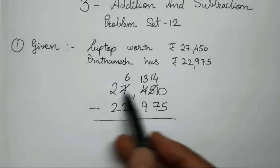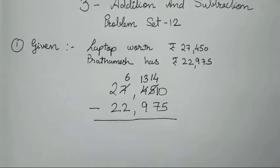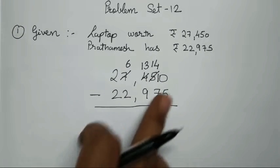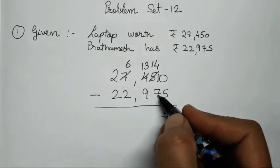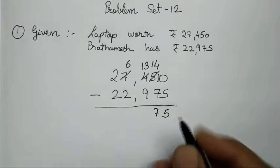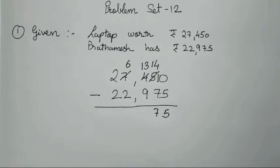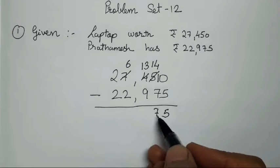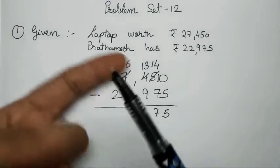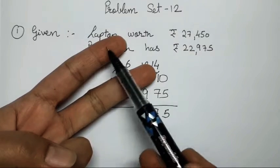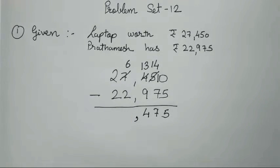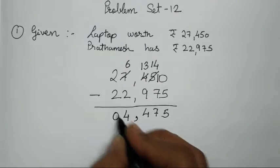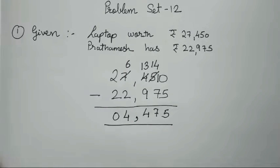Now simply we subtract: ten minus five is five; fourteen minus seven is seven — you can count: after seven, eight, nine, ten, eleven, twelve, thirteen, fourteen, so the number is seven. Continuing: thirteen minus nine gives four; six minus two is four; two minus two is zero.